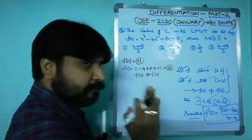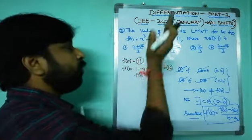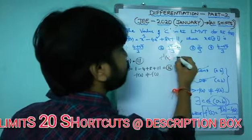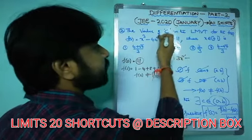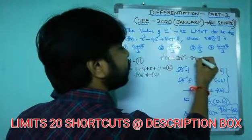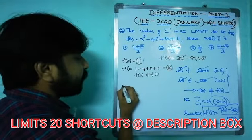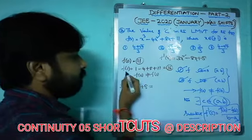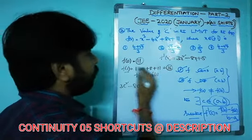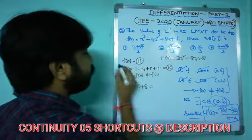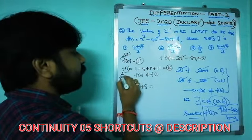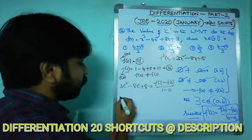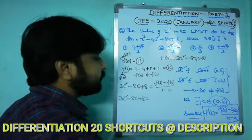Find f'(x): f'(x) = 3x² - 8x + 8. Setting f'(c) = [f(1) - f(0)] / (1 - 0): 3c² - 8c + 8 = (16 - 11) / 1 = 5.